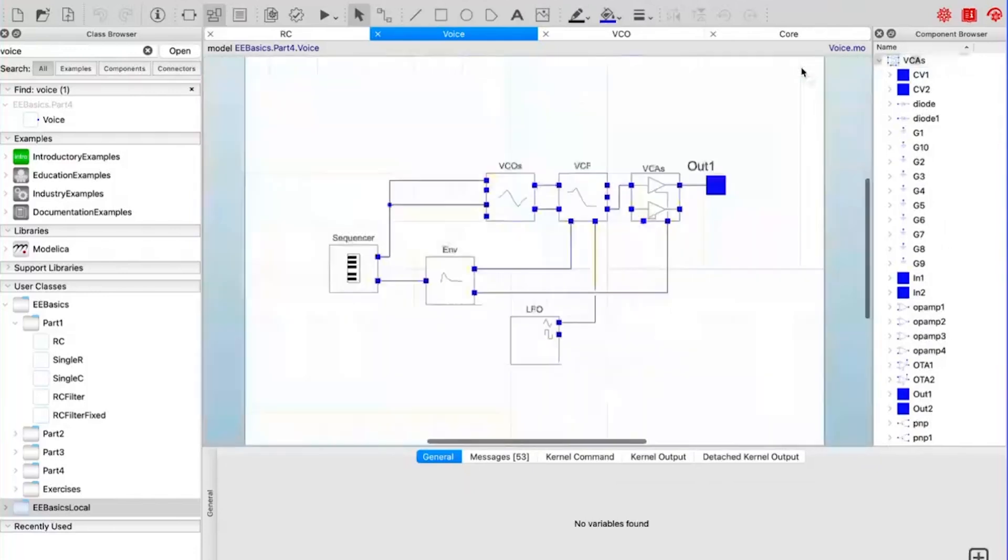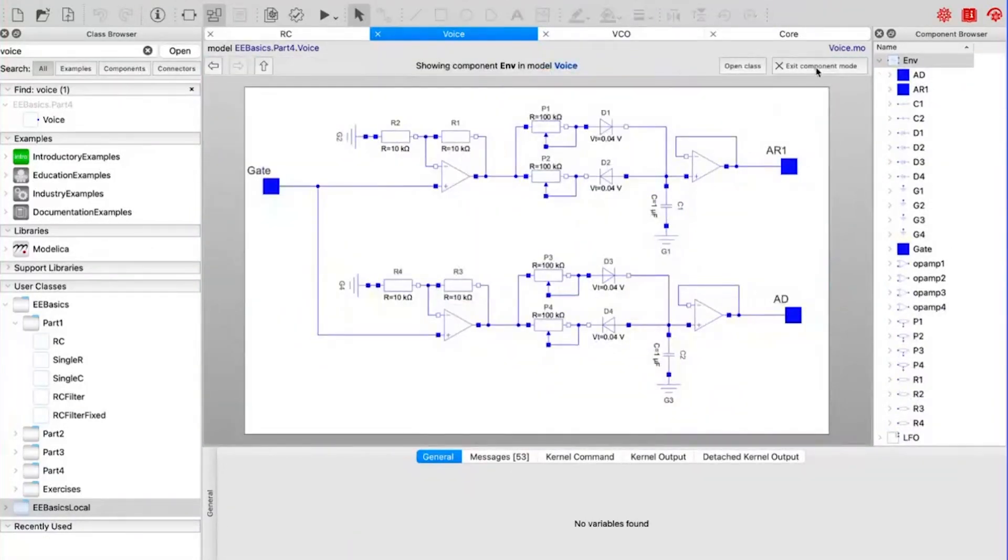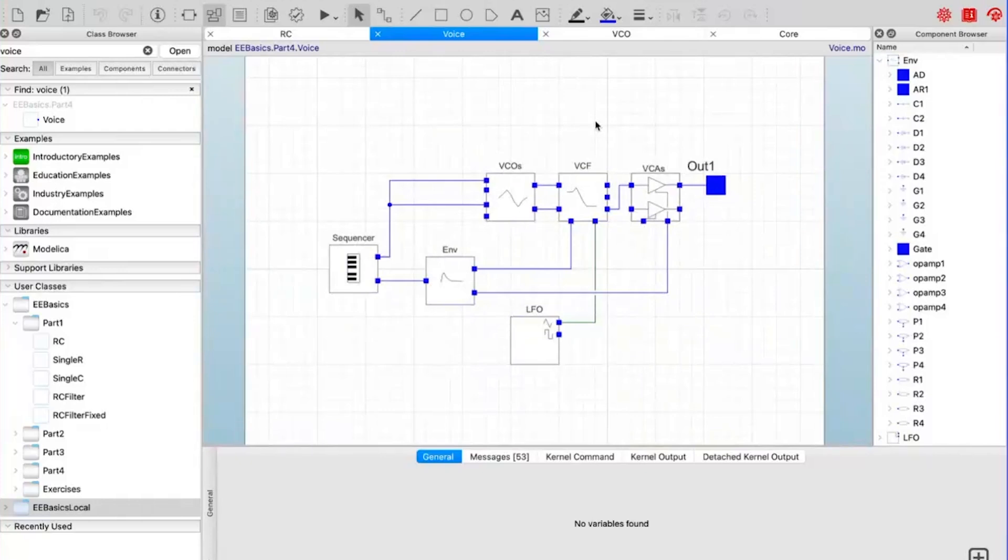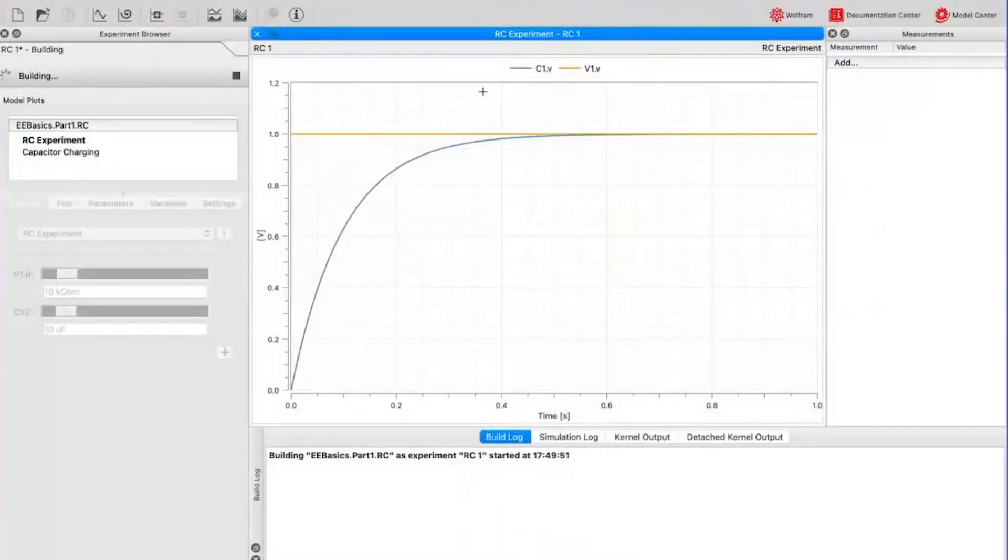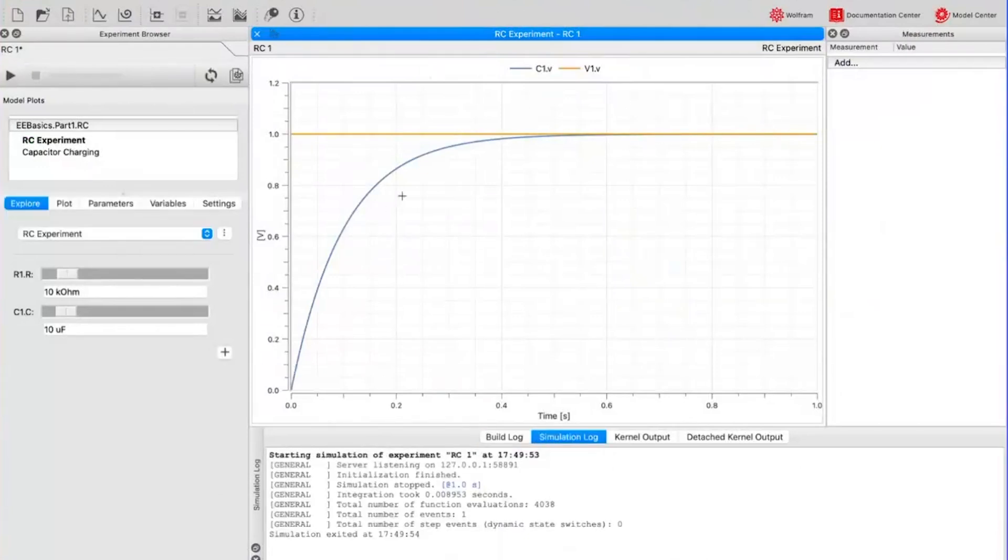So basically this block is a dual oscillator, it's the one that you saw in the video. This is the filter that I showed before and we can see all the electric components, the operational amplifier models, etc. This is a voltage controlled amplifier, the envelope generator. So the nice thing is that when we create this kind of diagrams we can simulate them and create on top of them the interactive panels.